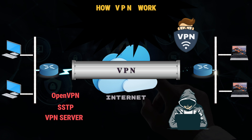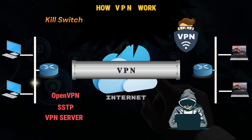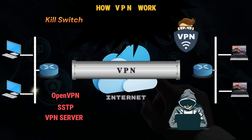Sometimes we notice that a VPN automatically disconnects because of Kill Switch. Kill Switch is a last resort security feature in some VPN products. If the VPN connection is disrupted, the Kill Switch will automatically disconnect the device from the internet to eliminate the chance of IP address exposure.